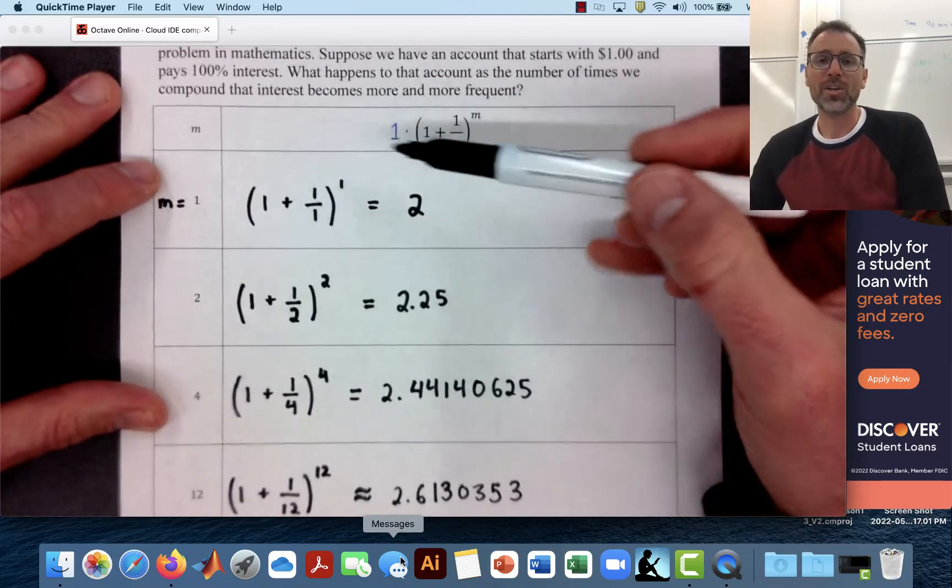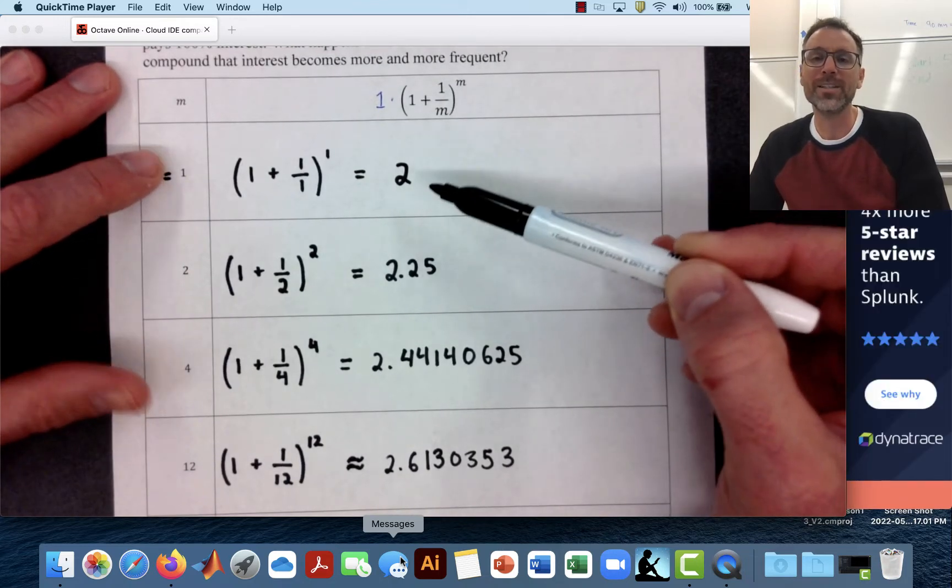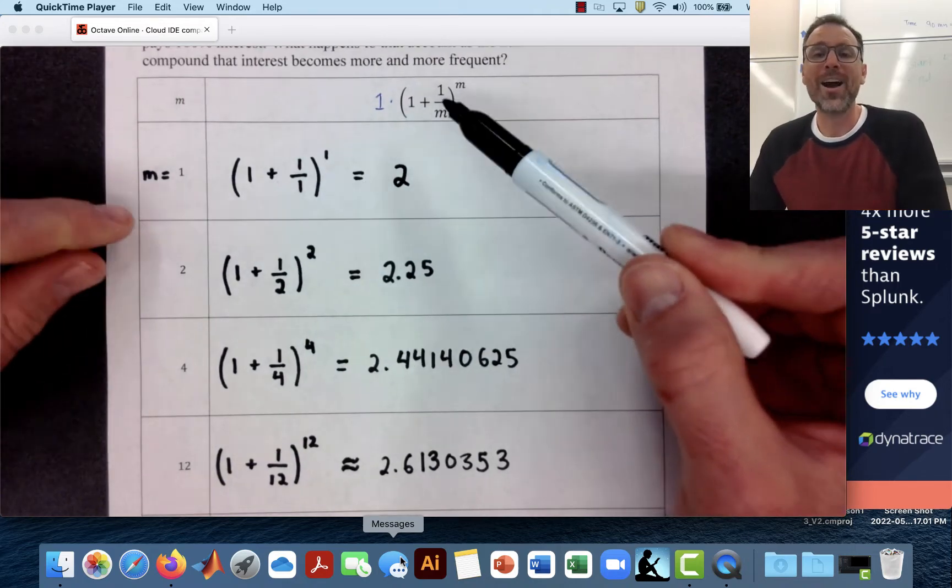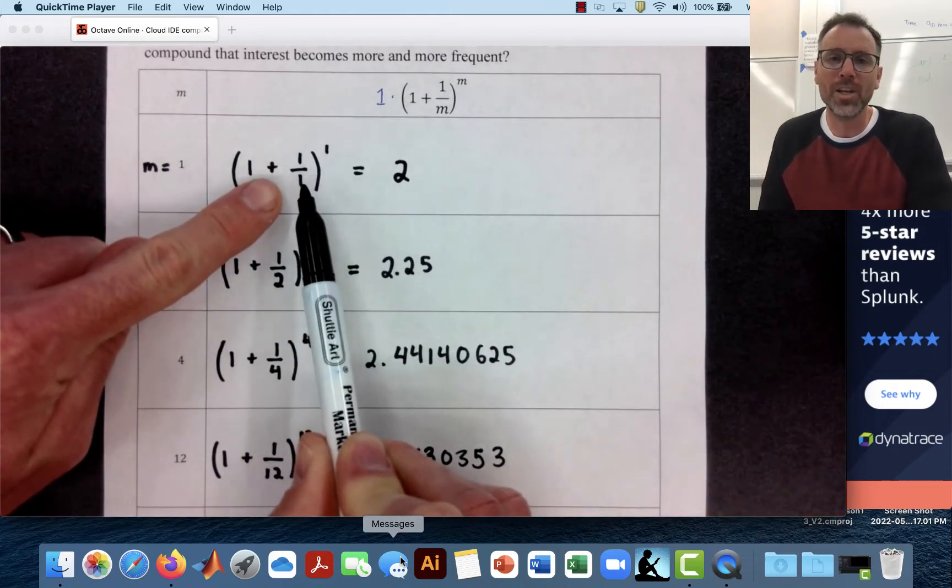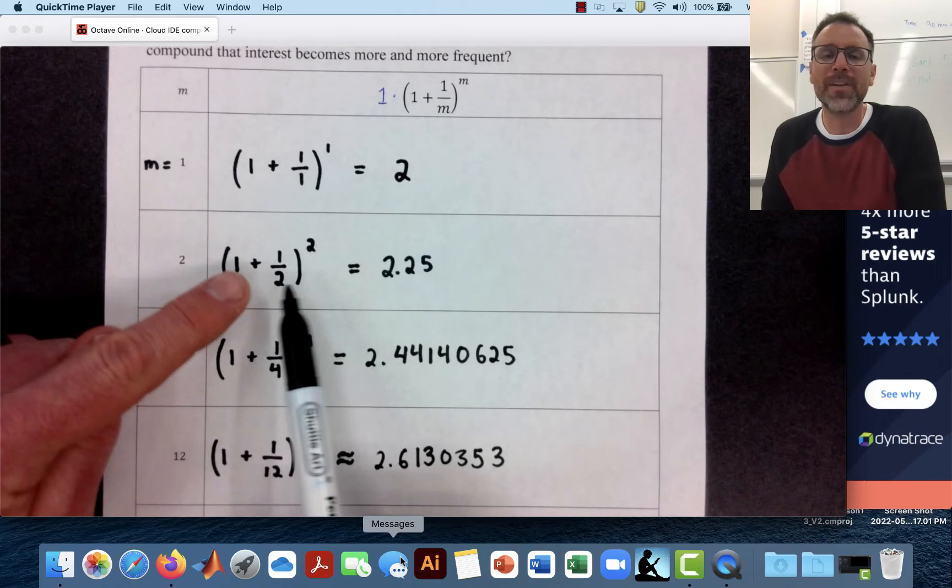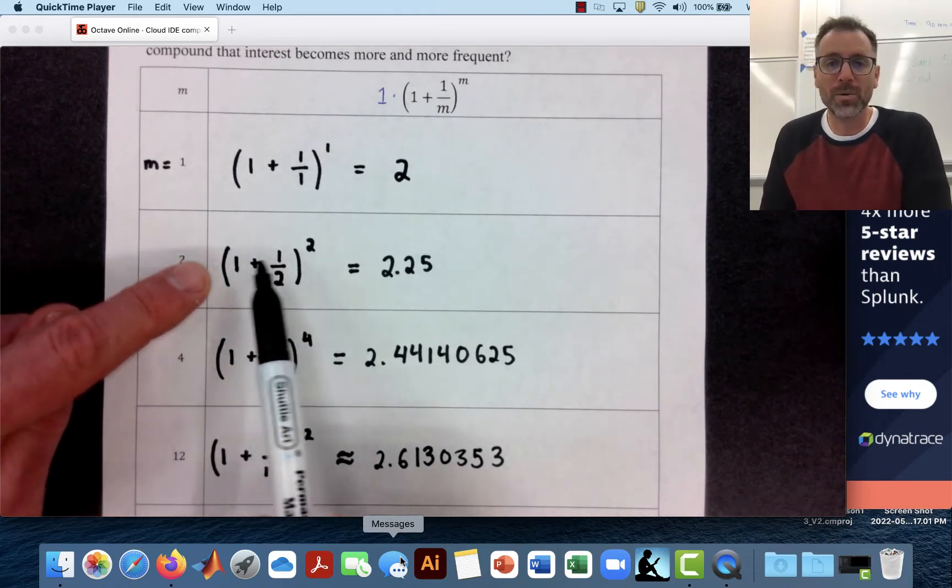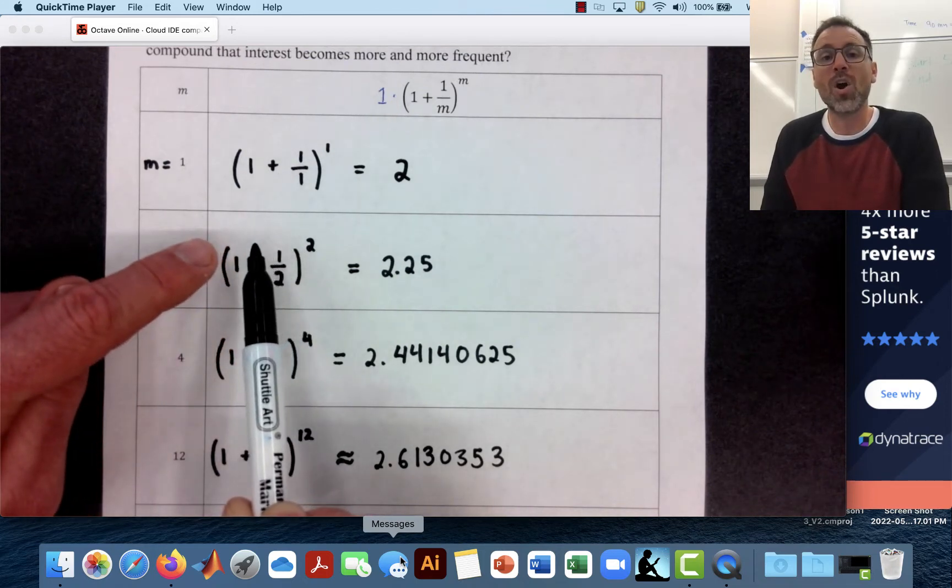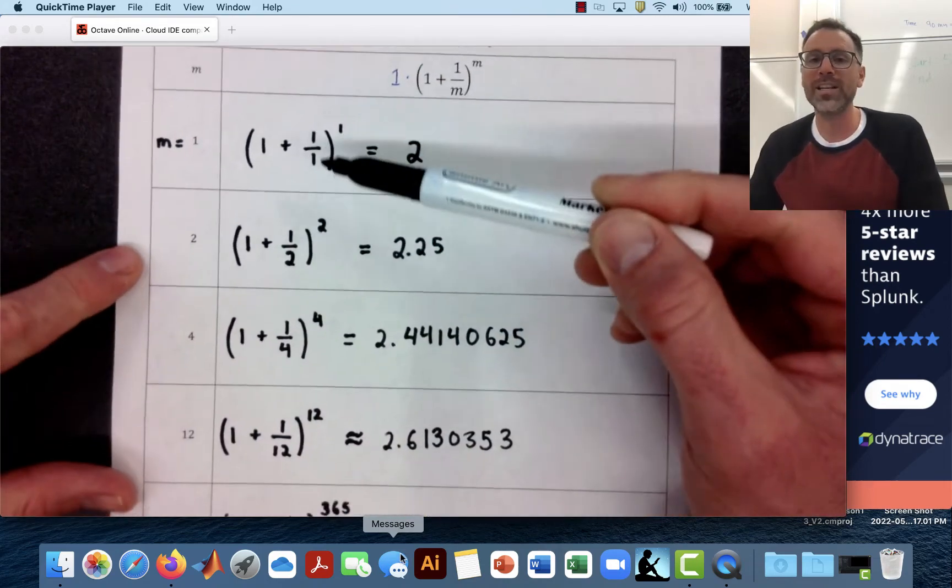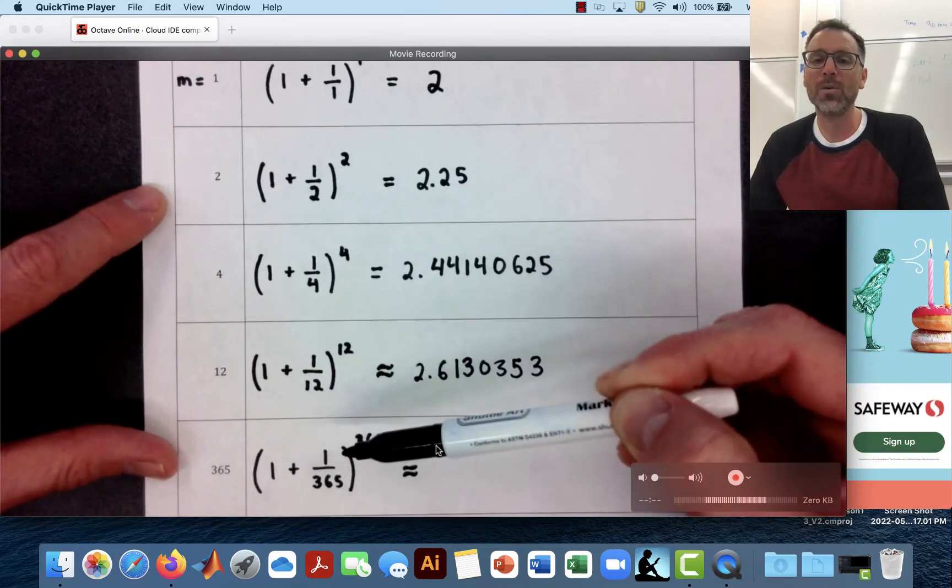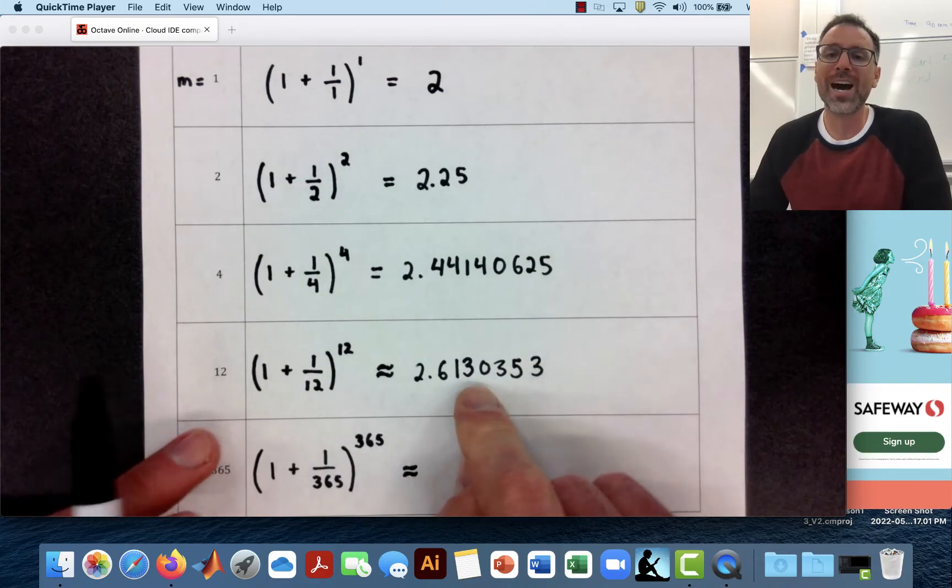So the idea is that we're kind of asking ourselves the question, what happens as the amount, the number of compounding periods increases? As we saw in the last video, when I compound more frequently, I earn interest on my interest. So if I only compound once a year, I only earn interest on my original principal. But if I compound twice a year, the first time I compound, I'm earning interest on my principal. The second time I compound, I'm earning interest on the original principal plus the interest that I earned in the last period, which is why this is higher. And what we're seeing is the more frequently I compound, the more times I earn interest on my interest. So the higher the number goes.